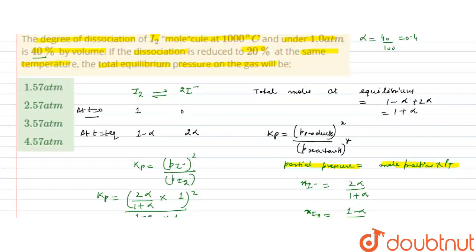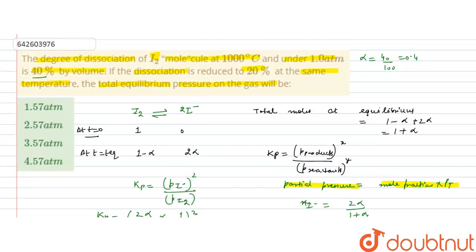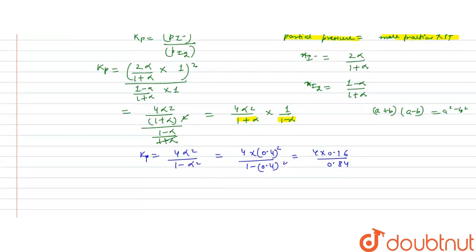Now, the degree of dissociation is reduced to 20% at the same temperature. Since Kp is only affected by temperature and the temperature remains the same, Kp will remain the same. So we can use the same Kp value.